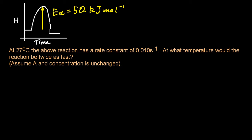So let's look at a typical question. At 27 degrees C, the above reaction has a rate constant of 0.01. At what temperature would the reaction be twice as fast? Assume A and concentration is unchanged.